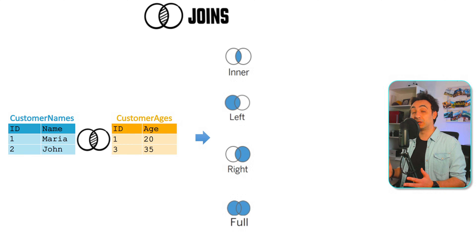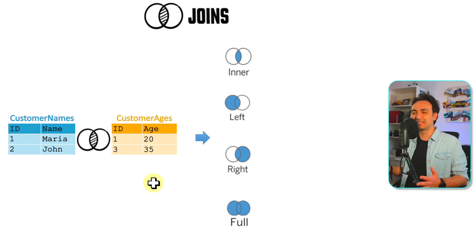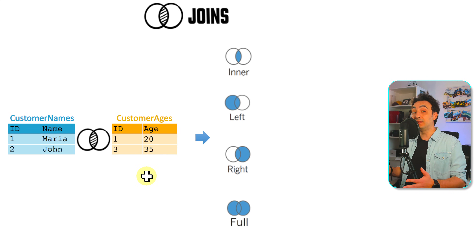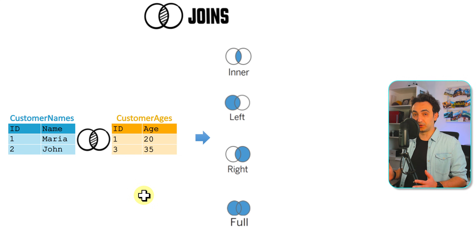Here we have two simple tables — one with customer names and one with customer ages. It makes no sense to have two separate tables about customers, so we want to combine them into one. The first table has the ID and names; the second table has the IDs and age. The key for this join is the customer ID. Let's see the different outputs using each join type.